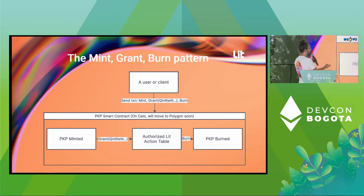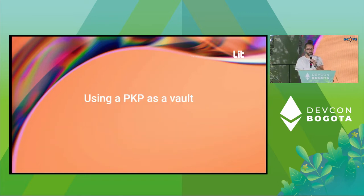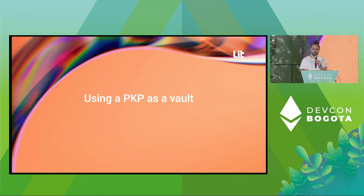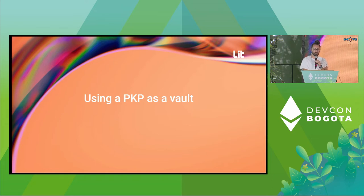The way you interact with and grant access is by talking to a PKP smart contract that currently lives on Celo, but we're going to move that to Polygon soon. You mint the PKP, grant access for it to use the lit action in the authorized lit action table, and then burn it all in one transaction. You can also use a PKP as a vault: mint a PKP, send a bunch of assets to it — NFTs, tokens, Ethereum, and even ones not on Ethereum like Bitcoin or Cosmos tokens — then sell the PKP NFT on OpenSea and transfer all the assets at once. You are essentially trustlessly trading a private key, something that has been impossible until now. This breaks soulbound tokens, because now you can trustlessly sell the wallet that contains your soulbound tokens in the same way you could sell a traditional ERC721 NFT. This also enables things like liquid staking for chains that lock up staked tokens like Ethereum 2.